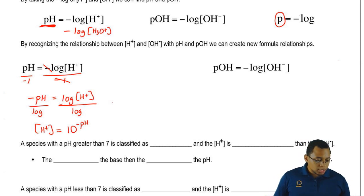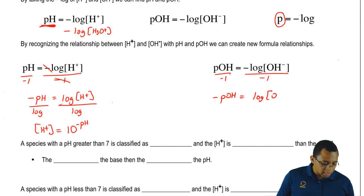We could do the same thing with pOH. Divide both sides by negative 1 where negative pOH equals log of OH minus. Divide both sides by log. So OH minus equals 10 to the negative pOH.